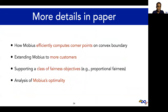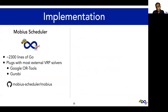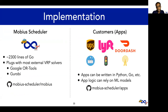Our paper includes more details about how Mobius invokes the VRP sparingly to efficiently compute corner points on the convex boundary. We also extend Mobius to support more customers, as well as a class of fairness objectives like proportional fairness and maximum fairness. Finally, we include a theoretical analysis of Mobius' optimality in our paper. We implement Mobius in about 2300 lines of Go, and it plugs with many standard VRP solvers out there today. We also implemented many customers or applications atop Mobius. Importantly, application logic is decoupled from the scheduling system, so we can support arbitrarily complex logic at the application layer. Our source code is available on GitHub.